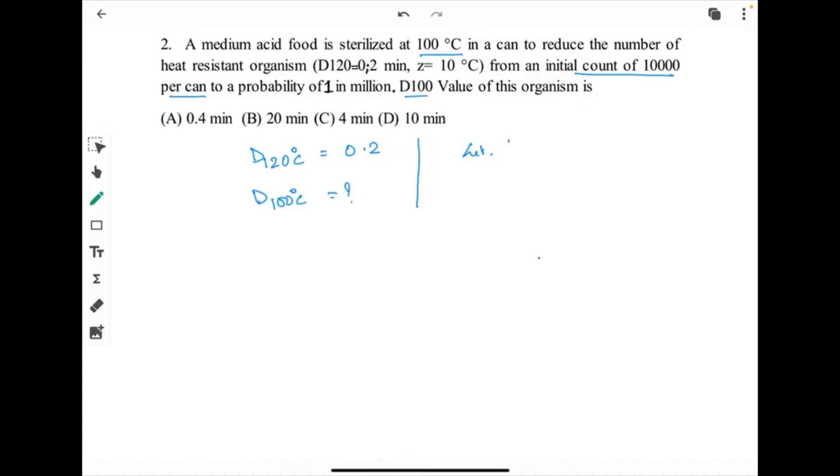Let we take 100 degree Celsius be temperature 1 and 120 degree Celsius be temperature 2. We know the formula D_T1/D_T2 equals 10 to the power (T2 minus T1) divided by Z. So, D 100 degree Celsius equals D 120 degree Celsius into 10 to the power (120 minus 100) divided by Z. We have Z equals 10 degree Celsius. What is D 120? 0.2 into 10 to the power (120 minus 100) divided by 10, then it will be 2. Therefore, 20 minute. Answer B is the correct answer.